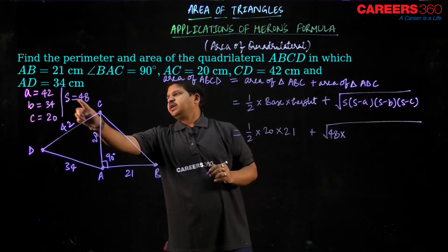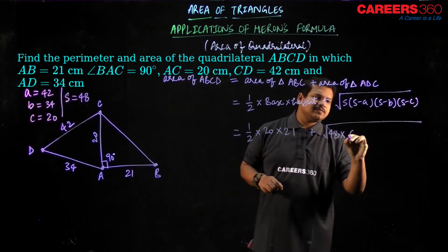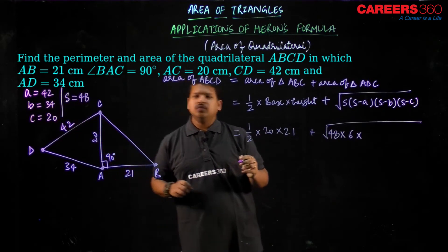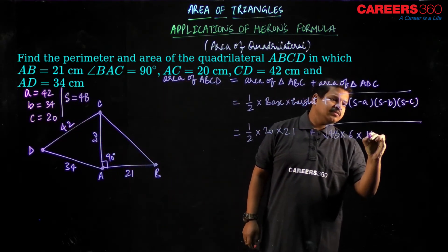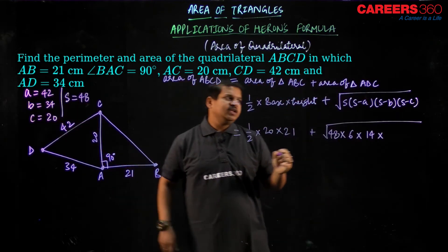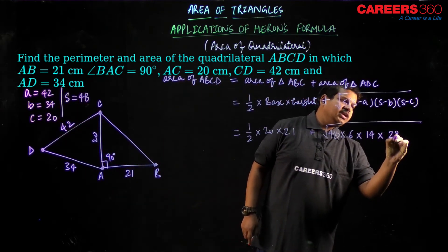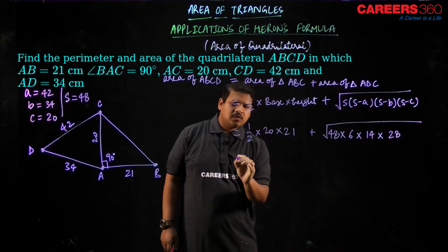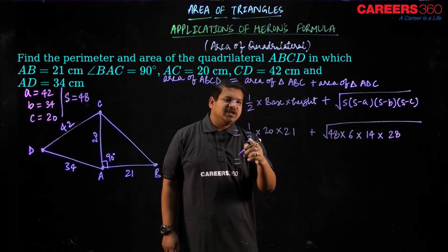96 divided by 2 would result in 48 under root of 48 into. Now 48 minus 42 is 6, 48 minus 34 is 14 and 48 minus 20 that is 28.